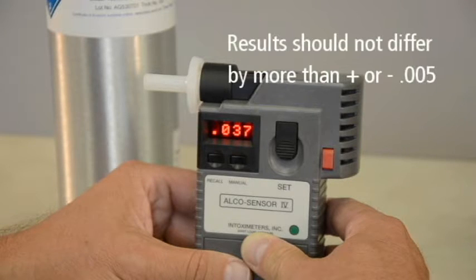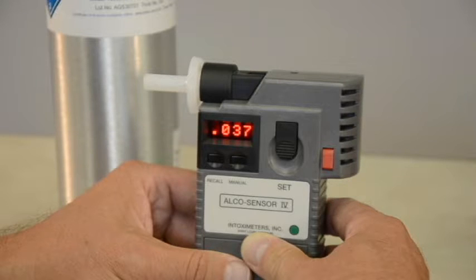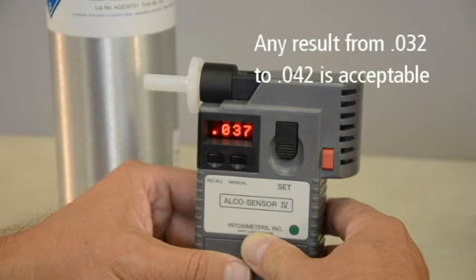Remember, the results of your accuracy check must be within plus or minus .005 of the expected known value. From our earlier example of an expected value of .037, any result from .032 to .042 is acceptable.